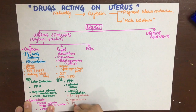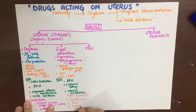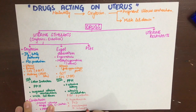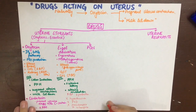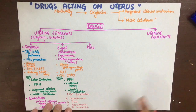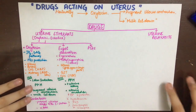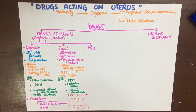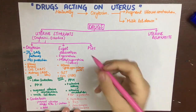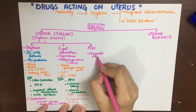Ergot derivatives are contraindicated in hypertensives, in peripheral vascular disease due to their vasoconstriction property, and also in sepsis and pre-eclampsia. Pre-eclampsia involves increased blood pressure and proteinuria in a pregnant lady, which can lead to eclampsia and convulsions due to increased permeability of the blood-brain barrier and edema.